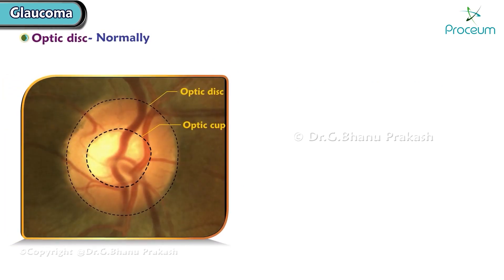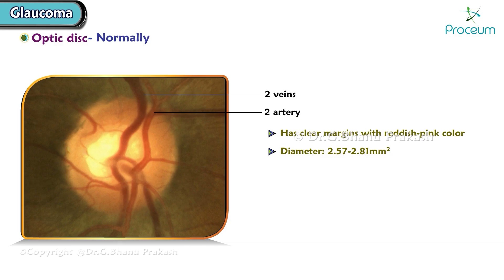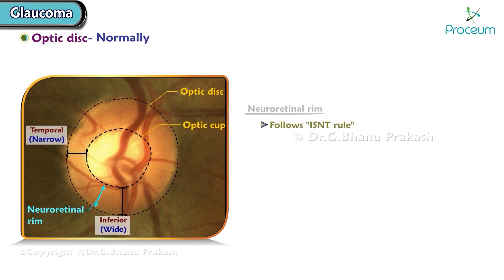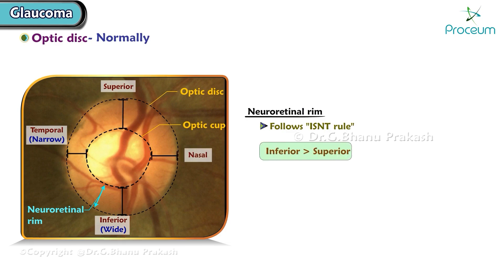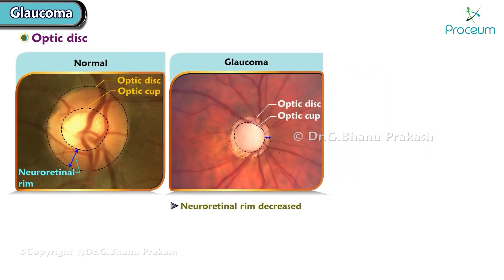Optic disc: normally the optic disc has clear margins with reddish-pink color and a diameter of 2.57 to 2.81 square millimeters. There are two central retinal arteries and two central retinal veins. Normally, the neuroretinal rim is widest inferiorly and narrowest temporally, following the ISNT rule: inferior > superior > nasal > temporal. In glaucoma, the neuroretinal rim is gradually decreased.